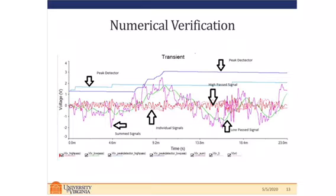Looking at the high-pass signal and the low-pass signal, we can see how the outputs of the filters are different based on the frequency of the input. The peak detector signals clearly show the DC offset and the maximum voltage of the input.